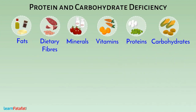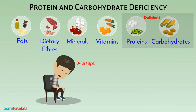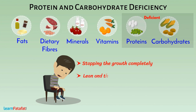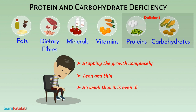If the diet is deficient in both protein and carbohydrates over a long time, then there is a threat of stopping growth completely. The person in such a case is lean and thin, and becomes so weak that it is even difficult for him to move.